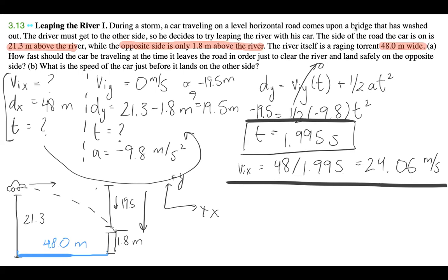Now the second part: What is the speed of the car just before it lands on the other side? So we know that to do this we need two components. We need vfx and we need vfy, and both components are going to give us our vf. So we know what our vfx is because we're not accelerating in the x direction. The x always stays constant, so the speed is going to stay constant. So vfx is equal to 24.06 meters per second.